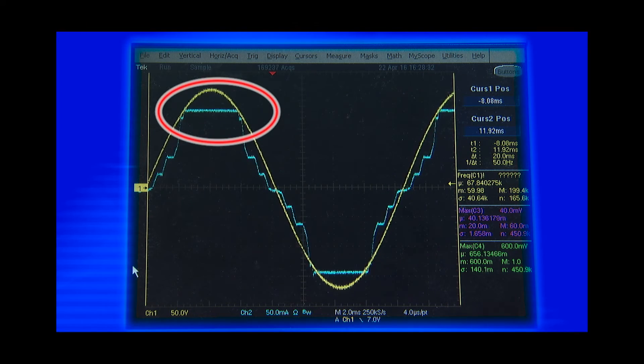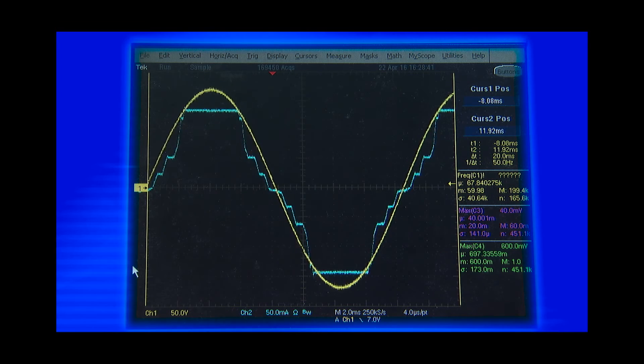As you can see, the input voltage and current are still in phase, even with the additional energy storage network added across the LED string. And the current waveform is also close to a sine wave, thereby giving you high PF and low THD performance.